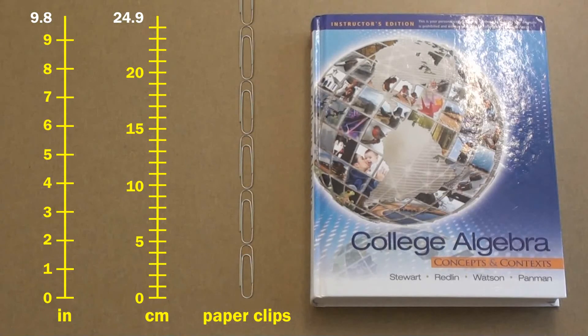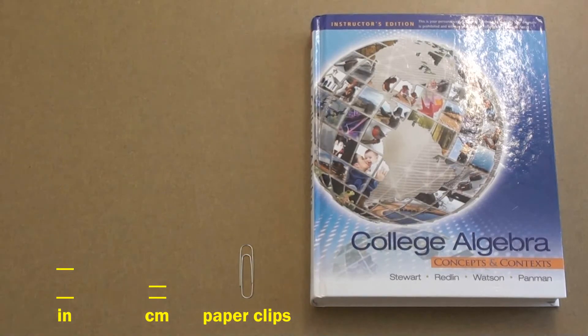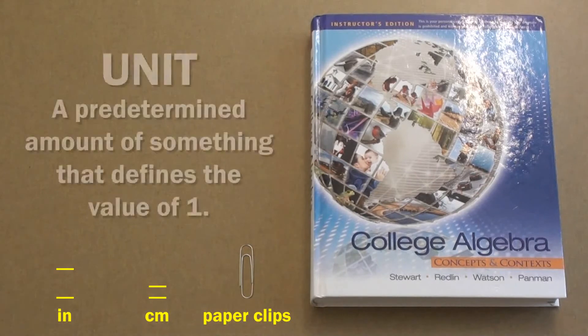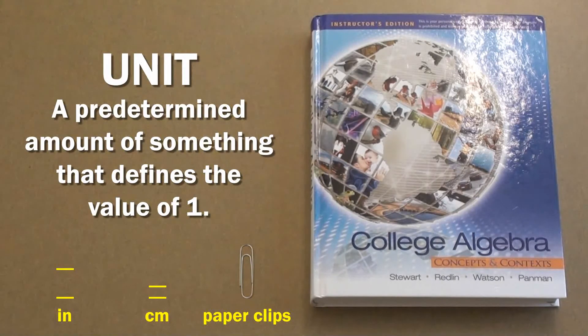These ways to measure the length of the book are different from one another, because each one has a different definition of the amount that one represents. Because of this, inches, centimeters, and paper clips can all be considered different units of length, because each defines the value of one differently. And that's what a unit is in a general sense. A unit can be viewed as a predetermined amount of something that defines the value of one.